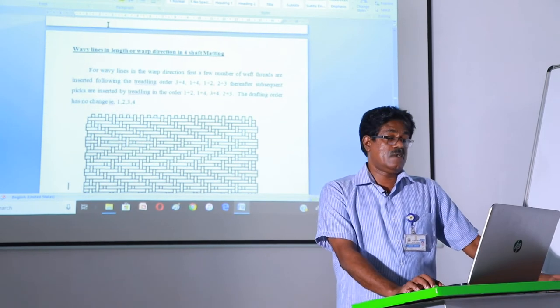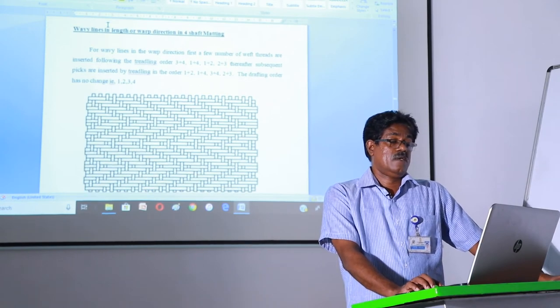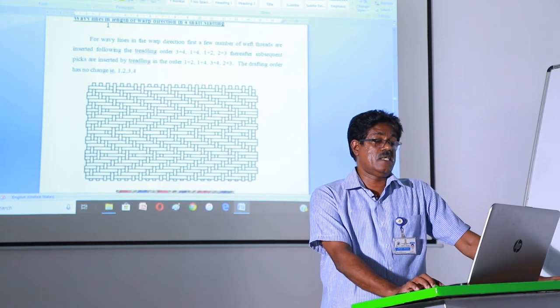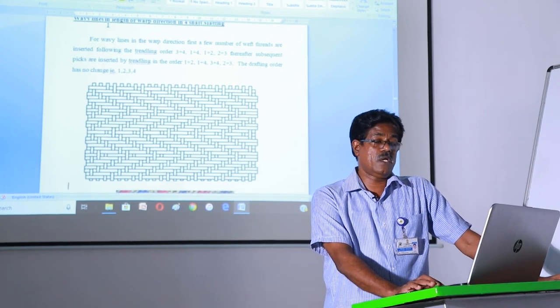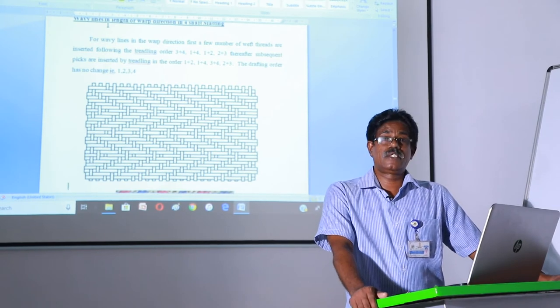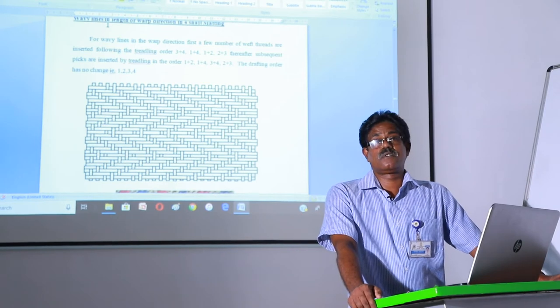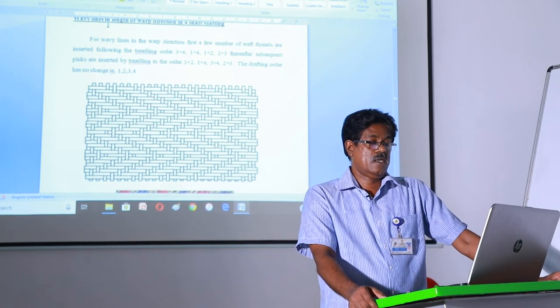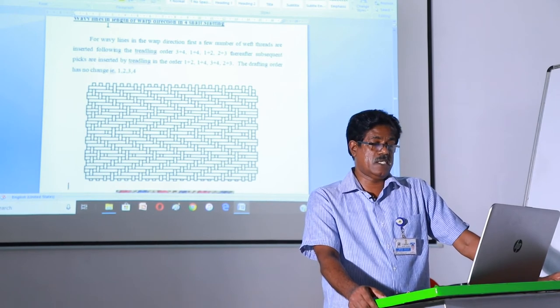Wavy lines in length way or warp direction in four shaft matting. For wavy lines in the warp direction, first a few number of weft threads are inserted following the treadling order three, four, one, four, one, two and two, three. Thereafter subsequent peaks are inserted